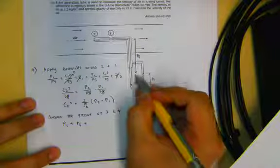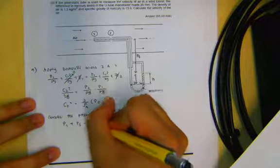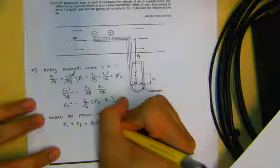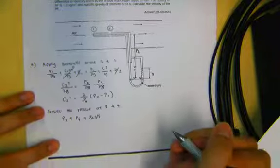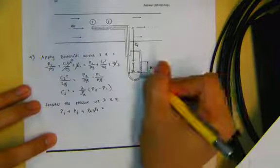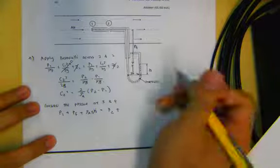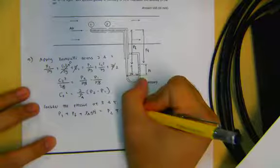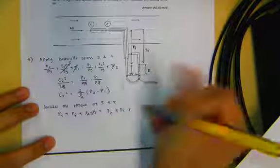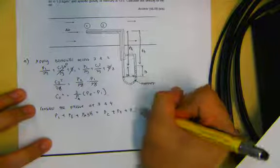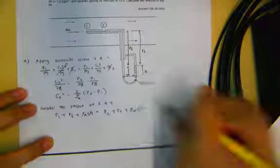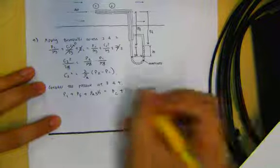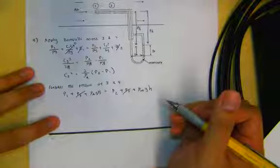Considering the pressure at points 3 and 4, the pressure at point 3 is due to P1 plus the fluid column height from here to here, which we label P_F.